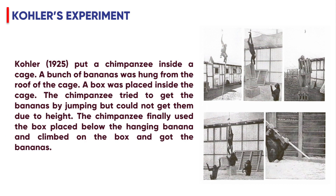Kohler's Experiment: Kohler put a chimpanzee inside a cage. A bunch of bananas was hung from the roof of the cage, and a box was placed inside the cage. The chimpanzee tried to get the bananas by jumping but could not reach them due to the height. The chimpanzee finally used the box, placed it below the hanging bananas, climbed on the box, and got the bananas.